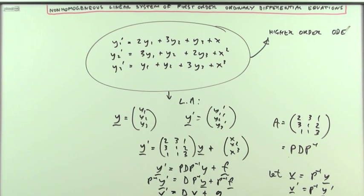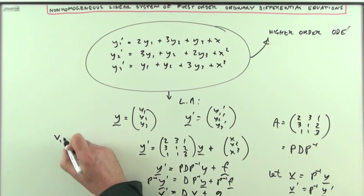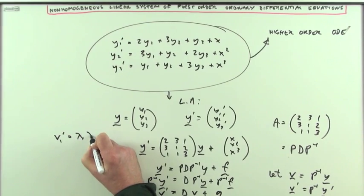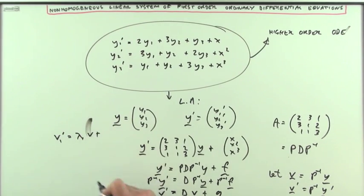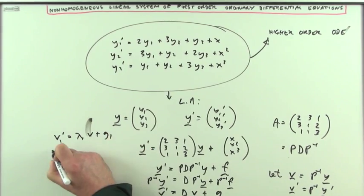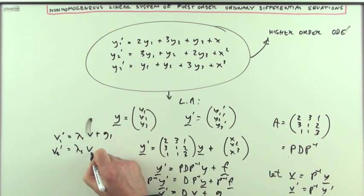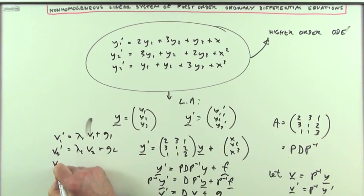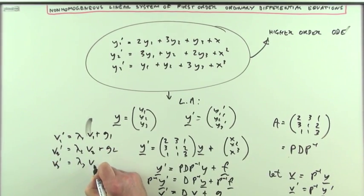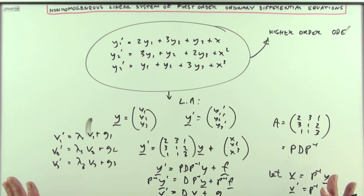Now with this, since that's a diagonal matrix, I can separate that into three separate ones. V1 dashed would be lambda 1 V1 plus whatever the first component of that was. V2 dash would be lambda 2 V2 plus the second component, and V3 dash would be lambda 3 V3 plus the third one. Those first order differential equations can be solved quite easily with integrating factors, and then you can change them back again and there's the answer.